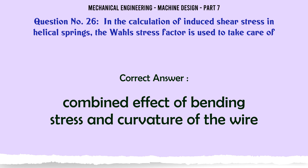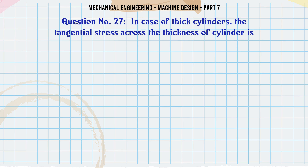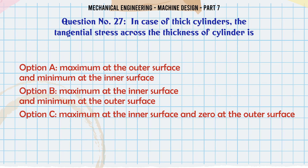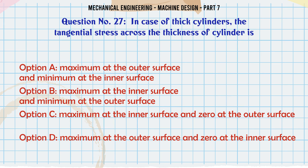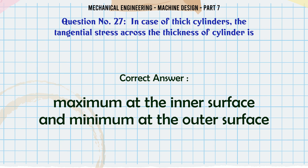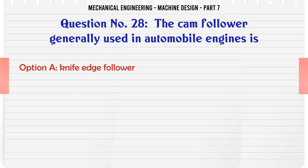In case of thick cylinders, the tangential stress across the thickness of the cylinder is: a) maximum at the outer surface and minimum at the inner surface, b) maximum at the inner surface and minimum at the outer surface, c) maximum at the inner surface and zero at the outer surface, d) maximum at the outer surface and zero at the inner surface. The correct answer is: maximum at the inner surface and minimum at the outer surface.